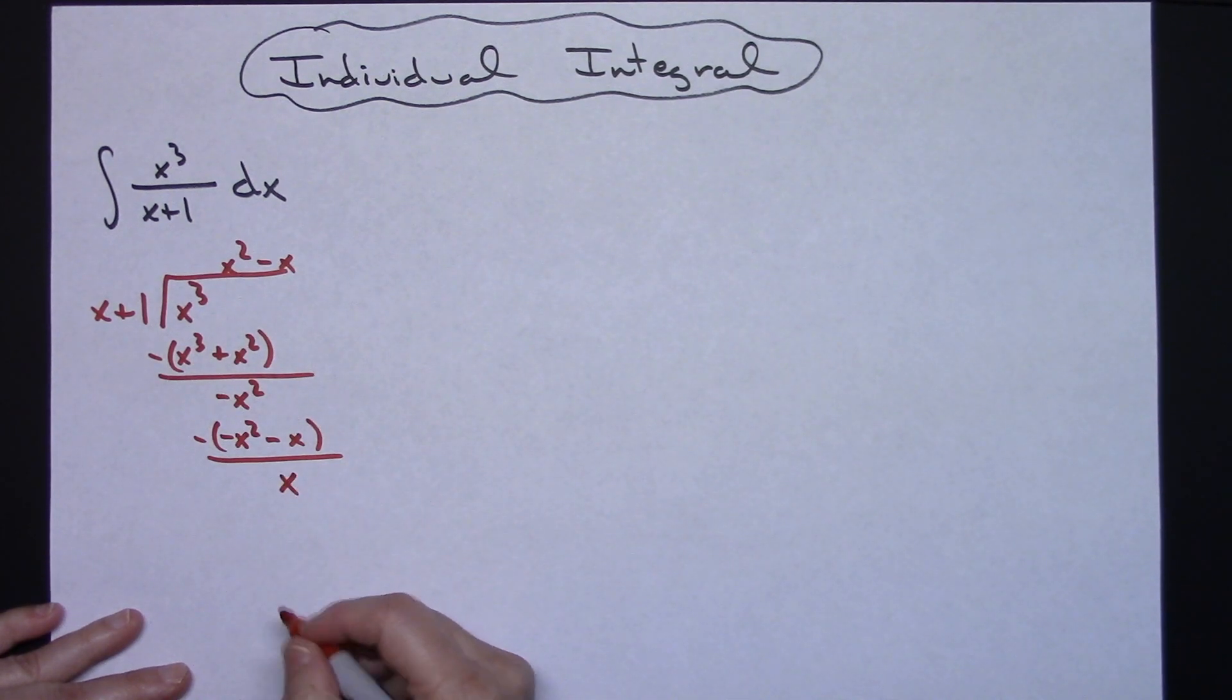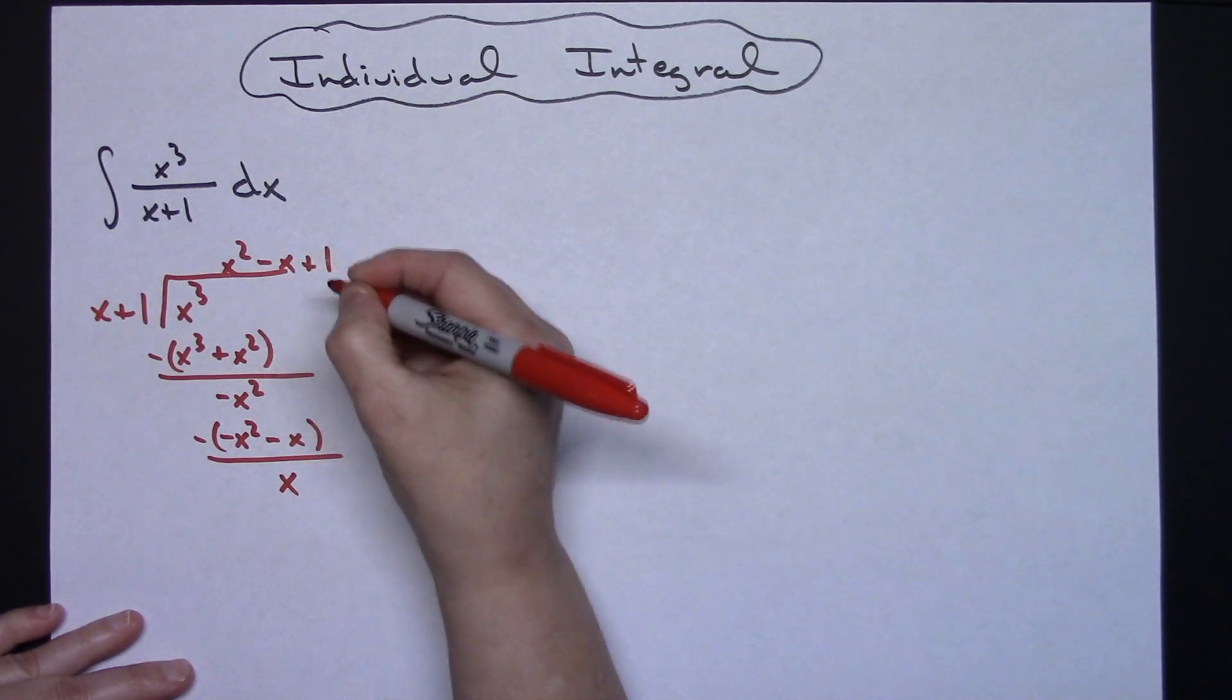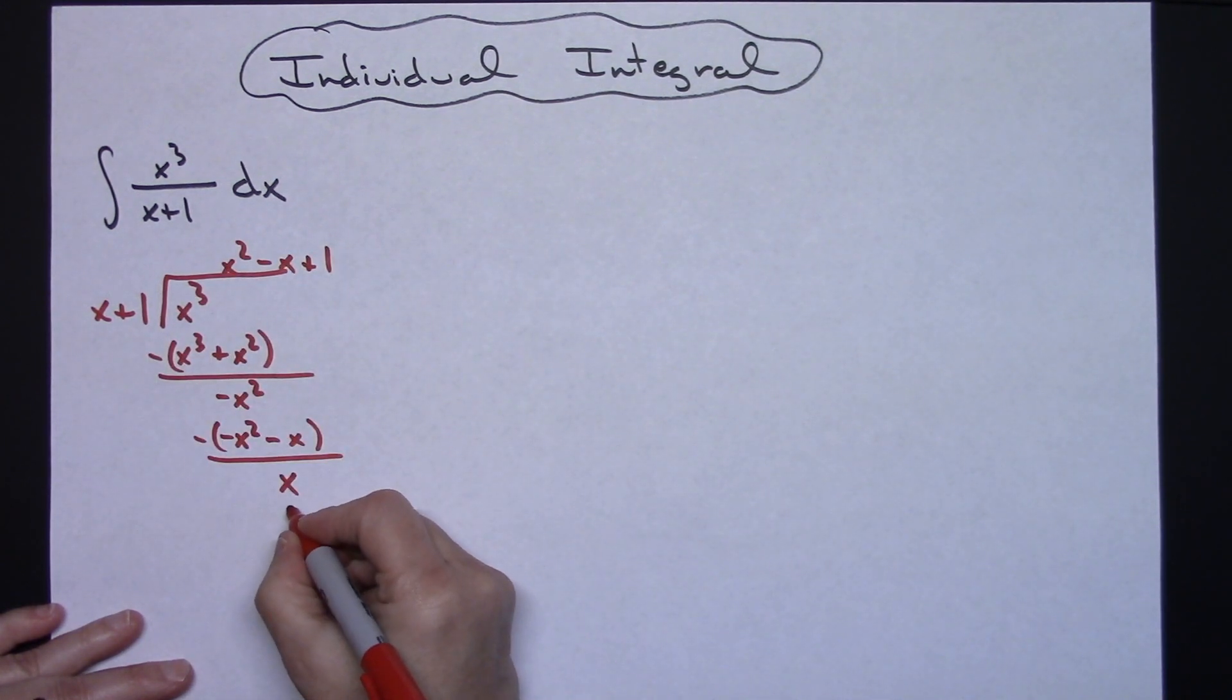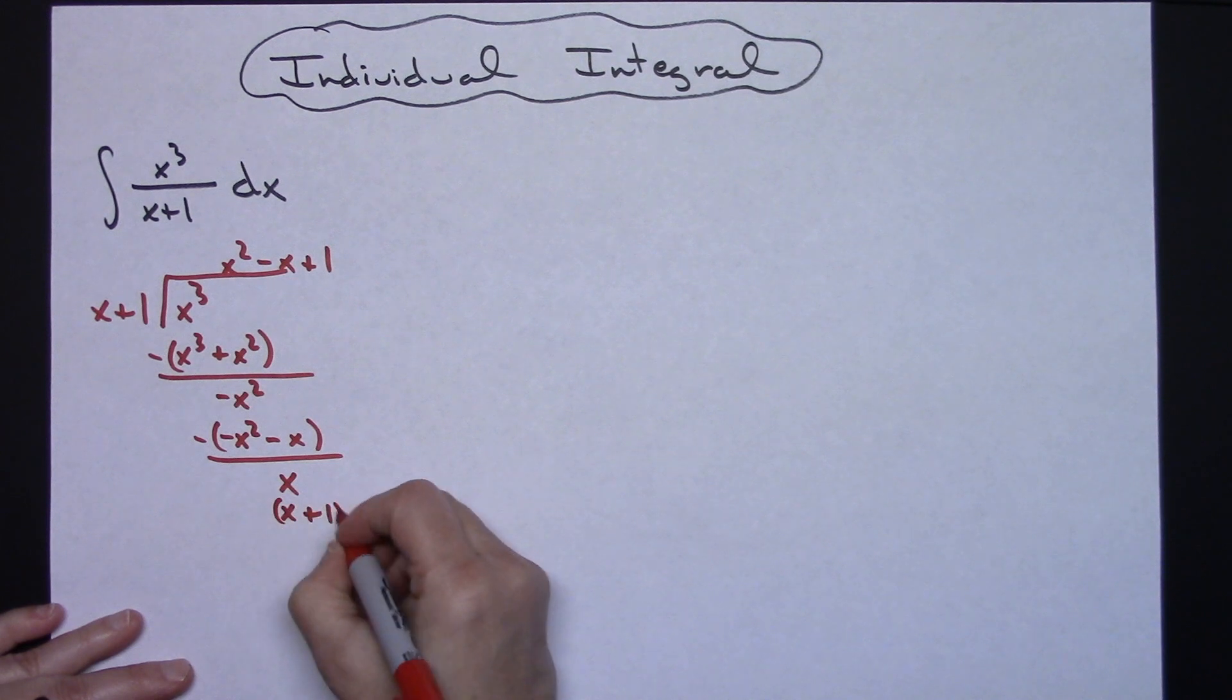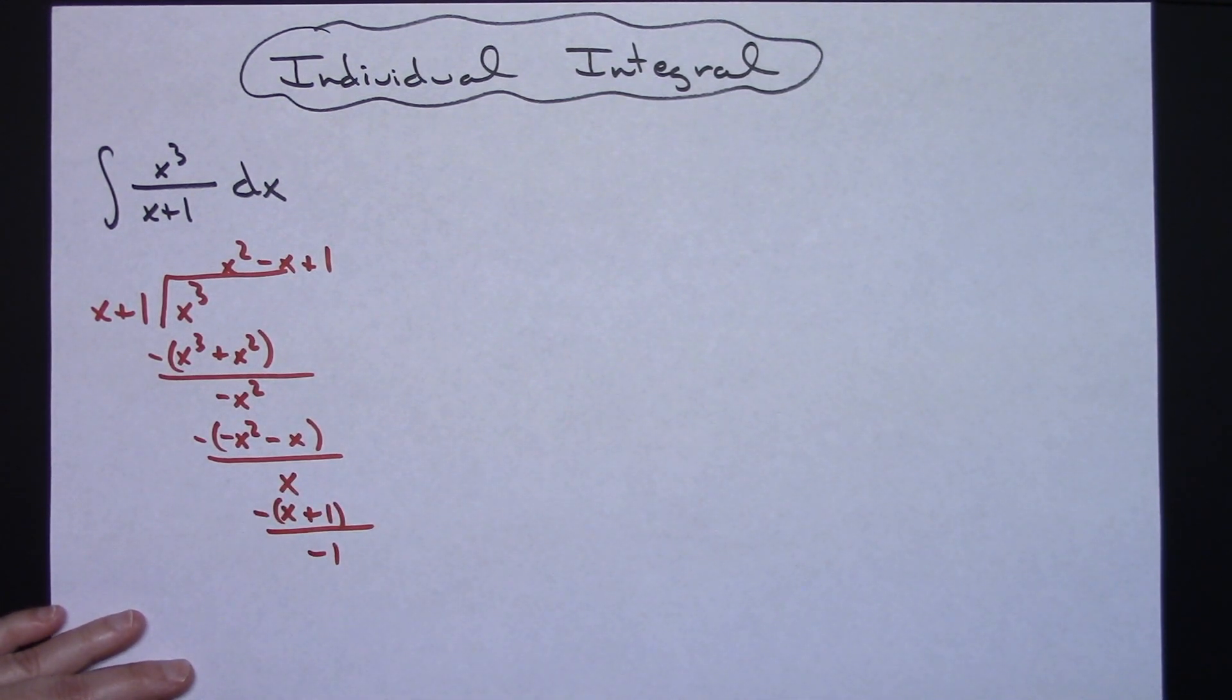X going into this X one time. Multiplying coming around, that'll give me an X+1, and subtracting that quantity will give me a remainder of negative one.